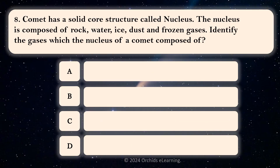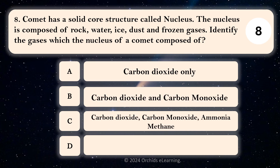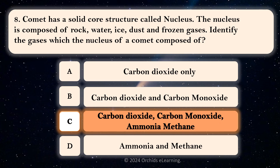A comet has a solid core structure called the nucleus. The nucleus is composed of rock, water, ice, dust, and frozen gases. Identify the gases which the nucleus of a comet is composed of. C. Carbon dioxide, carbon monoxide, ammonia, and methane.